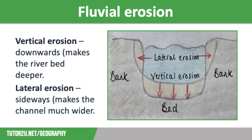It is also important to understand that river valleys experience both vertical and lateral erosion. Vertical erosion is downwards erosion that makes the riverbed deeper. It is usually caused by hydraulic action and occurs in the upper course of the river, causing steep-sided V-shaped valleys. Lateral erosion on the other hand is sideways erosion, wearing the riverbank away to make the channel much wider. It occurs in the middle and lower courses of the river and leads to wide flat valleys.